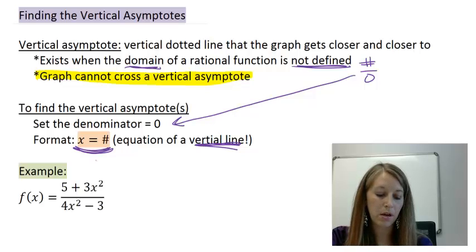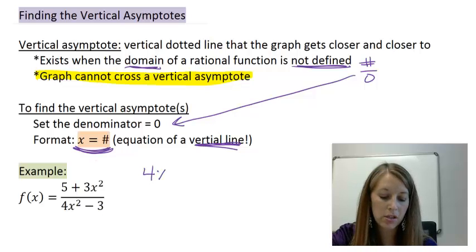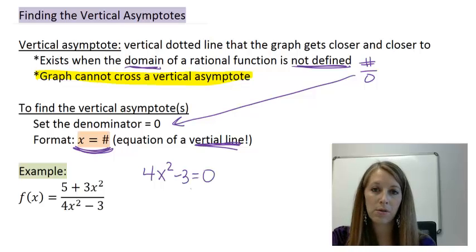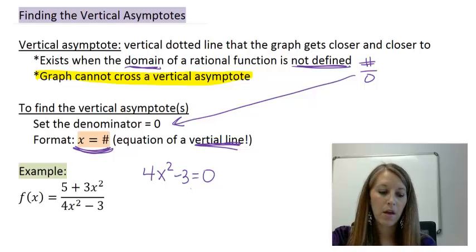So, in this example here, if we're trying to find our vertical asymptote, we do it by just setting our denominator, 4x squared minus 3, equal to zero. And then we solve it using all of those solving equation techniques that we've learned so far.